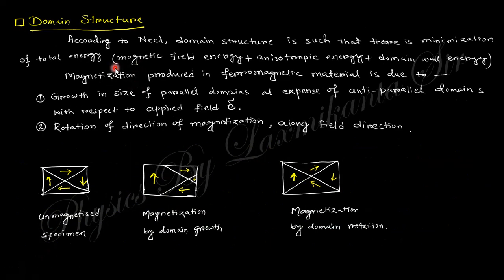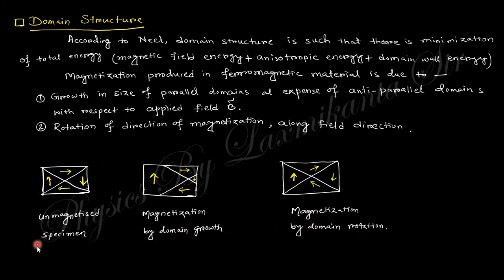Regarding domain structure: if the dipoles within domains are aligned in certain arrangements, you have an unmagnetized specimen. Magnetization can then occur either by domain growth or by domain rotation.